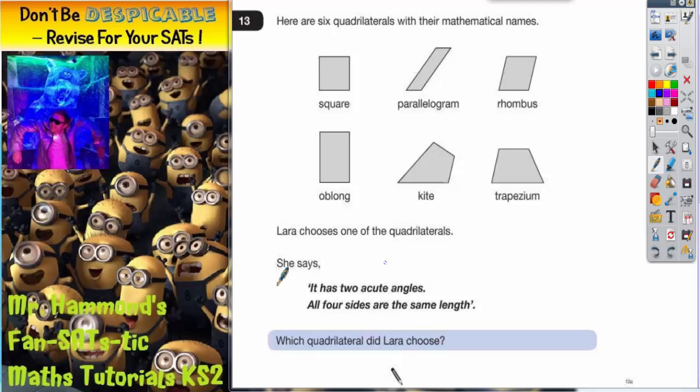Lara chooses one of the quadrilaterals. She says it has two acute angles and all four sides are the same length.